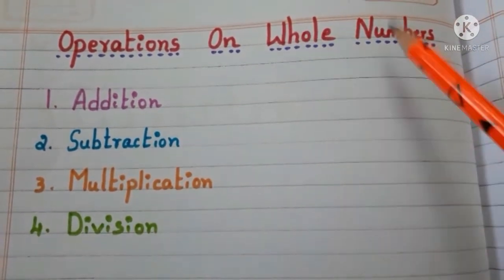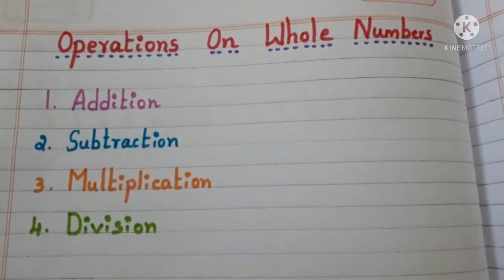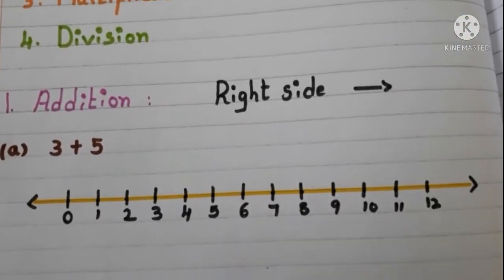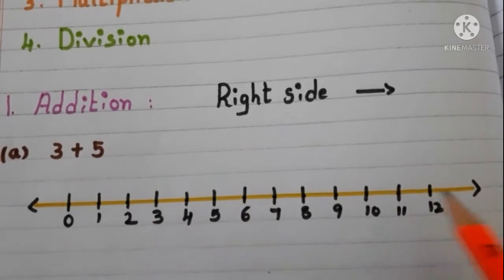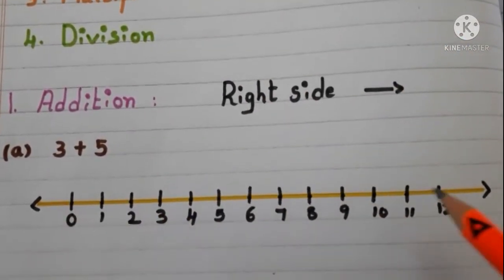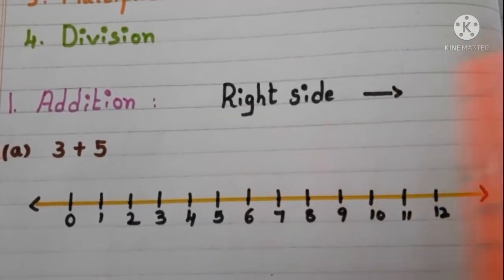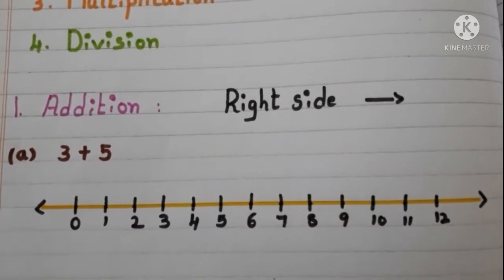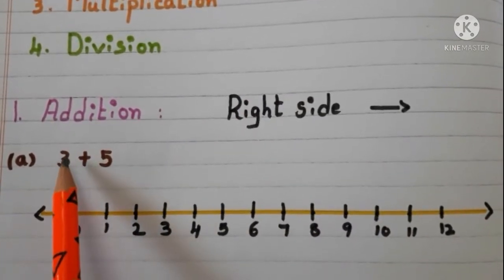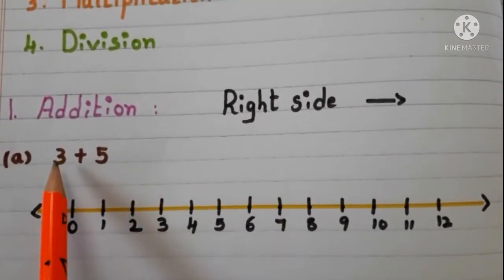First we start with addition. Let us see how to add two numbers by using a number line. When we want to add two numbers by using a number line, we have to move to the right side on the number line. Let us see with an example — here we have to add 3 and 5. What is the first number? 3, right. So we have to start at 3.